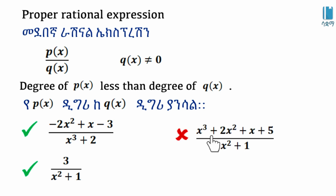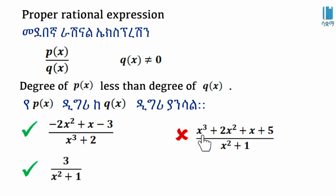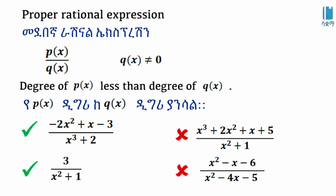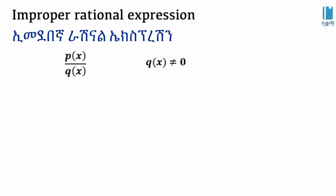Another example: 3 over x squared plus 1. The polynomial 3 has degree 0 (x to the power of 0), and the leading term x squared has degree 2. Since degree 0 is less than degree 2, this is a proper rational expression. Now consider x cubed plus 2x squared plus x plus 5 over x squared plus 1, and x squared minus x minus 6 over x squared minus 4x minus 5.